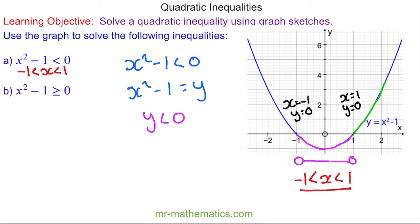Those points are here and here. You can see from our green lines that our x values include negative one and go less than that, and they include positive one and go greater than that. So our solutions now are: x is less than or equal to negative one, and x is greater than or equal to positive one.